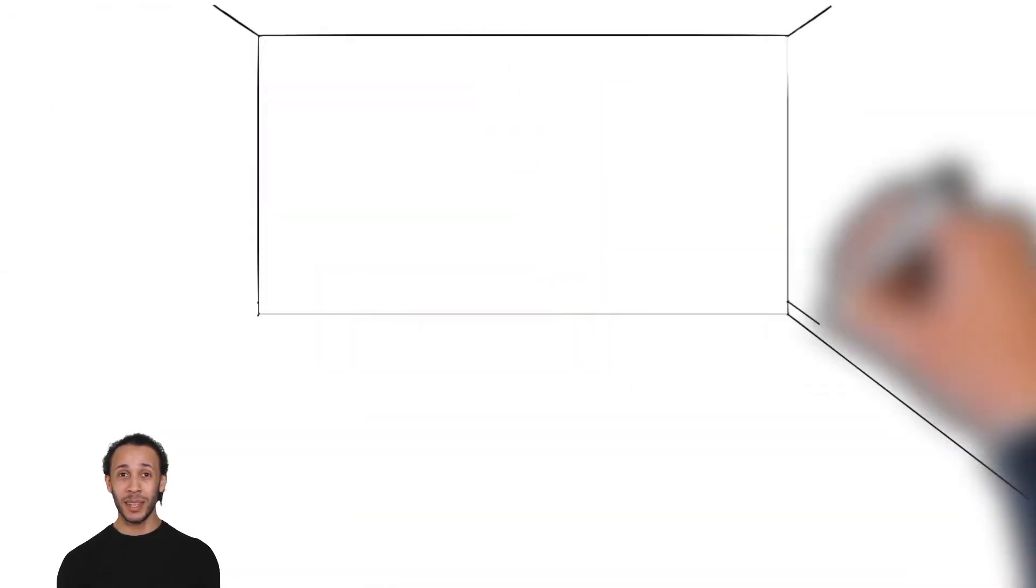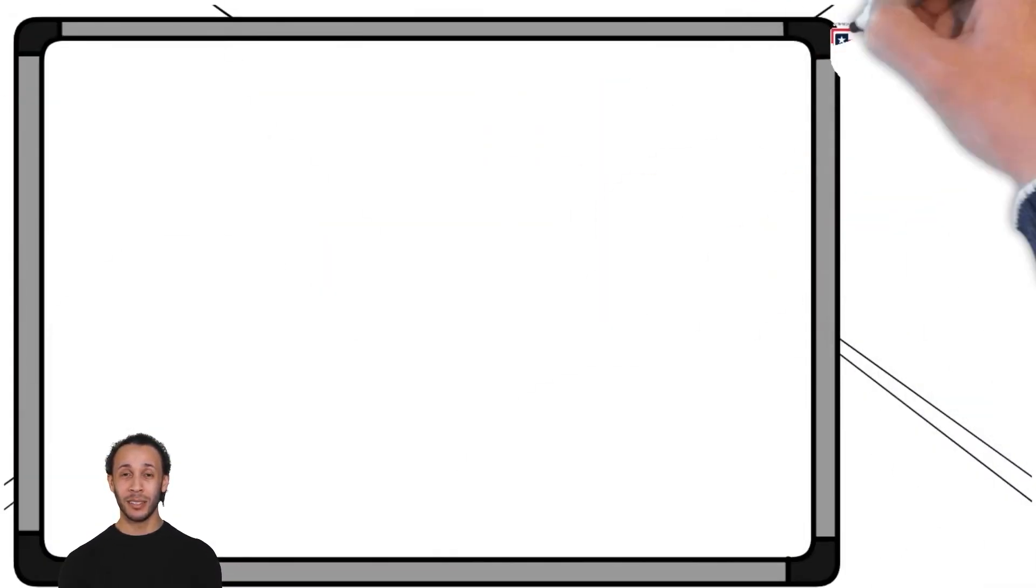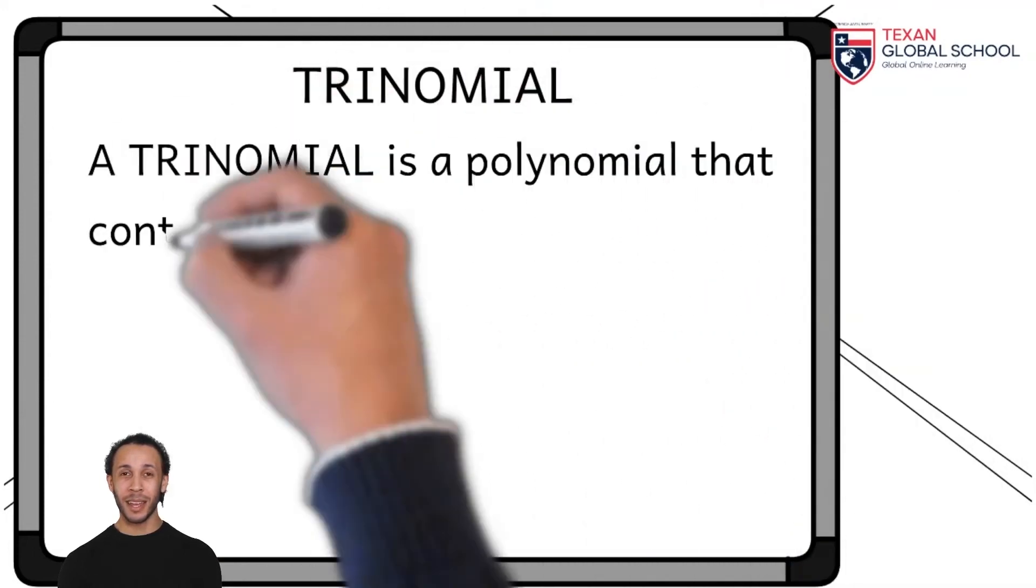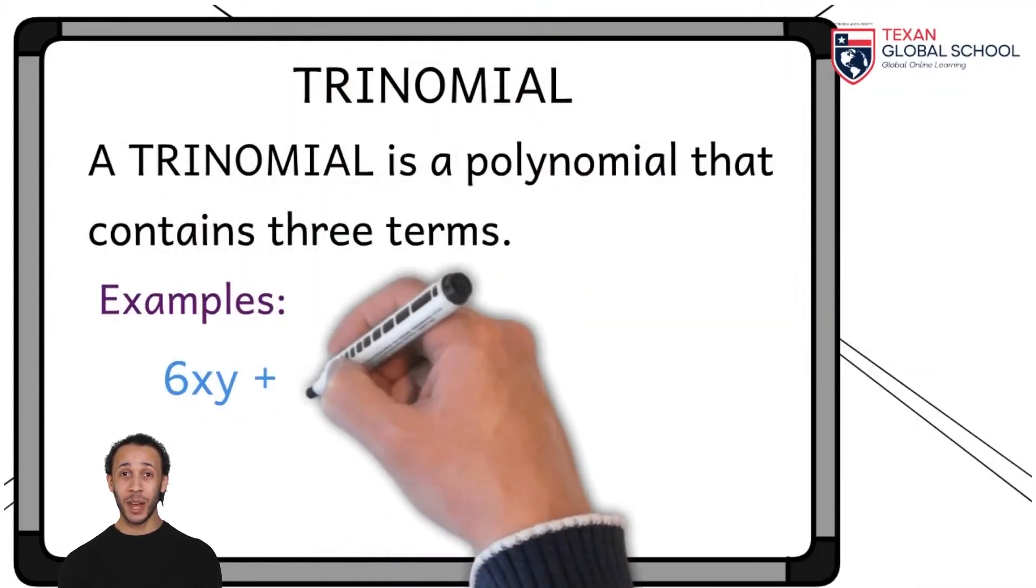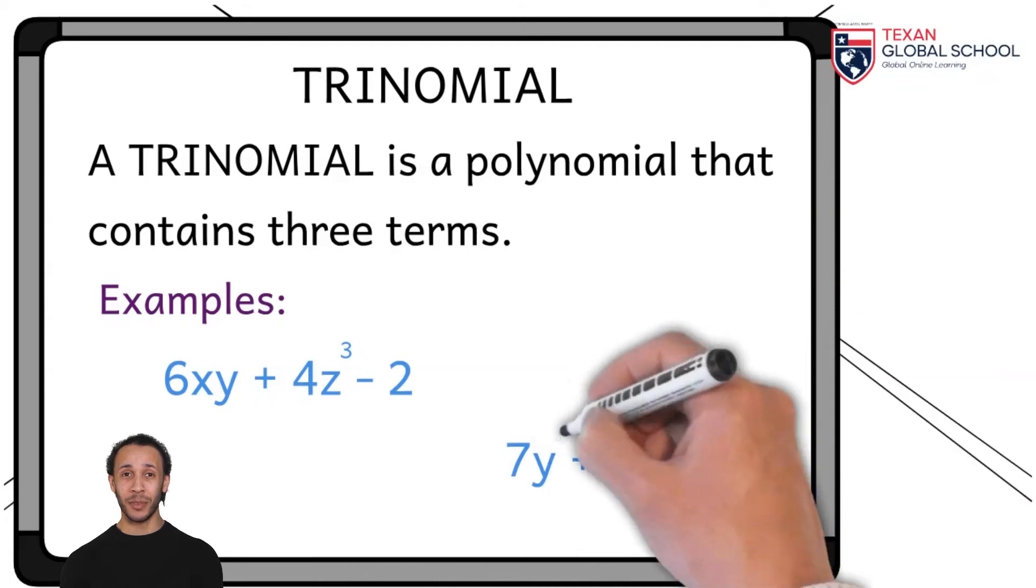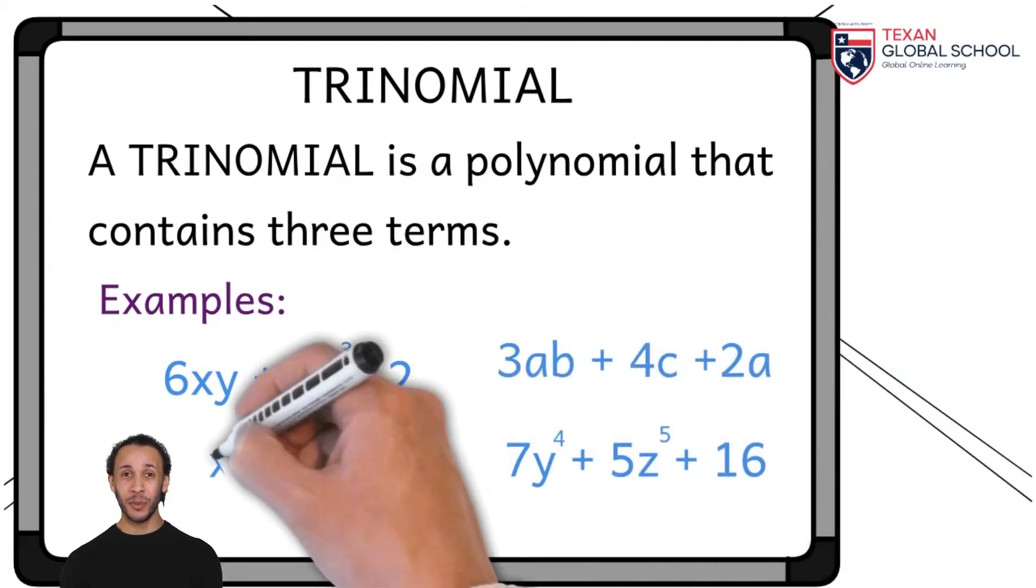Therefore, we define a trinomial as a polynomial that contains three algebraic terms. In this way, the classification of polynomials is followed. Various examples are shown as this type of expression with three terms.